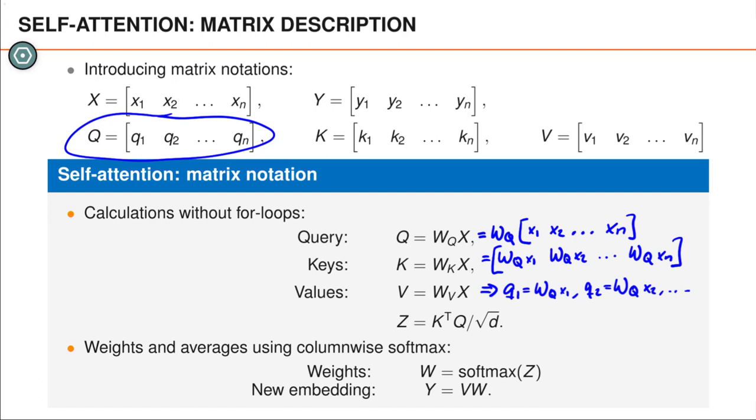We can also express the matrix z as a simple matrix product k transpose q divided by the square root of d. It is simple to multiply these matrices together and verify that element ji in z is kj transpose qi divided by the square root of d which confirms that our new expression for z is equivalent to the one presented previously.